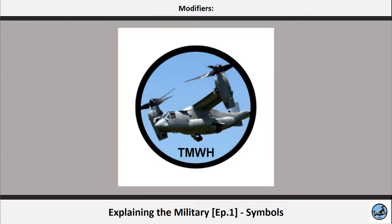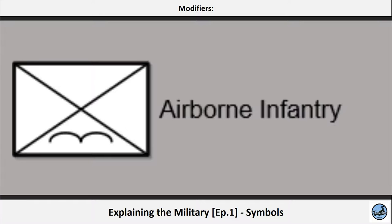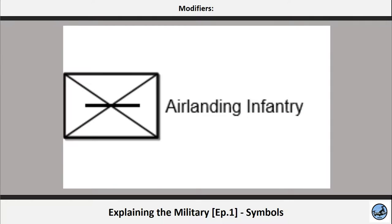There is also the possibility that some units may have been modified or have specific characteristics. In order to represent them, they have so-called modifiers. Airborne troops are represented by the wings of a seagull — on screen, this is airborne infantry. Air landing is similar but the modifier is a line that represents the wings of a glider, or the blades of a helicopter if seen from the front. On screen: air landing infantry.